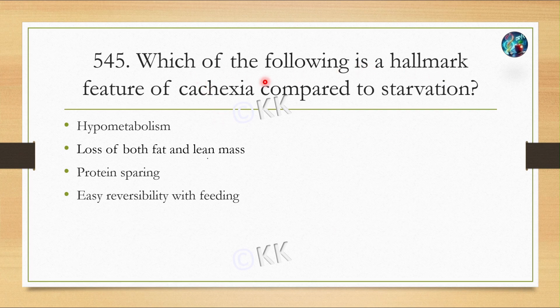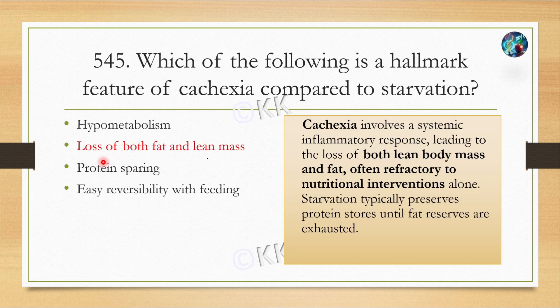Next question: which of the following is a hallmark feature of cachexia compared to starvation? Option A: hypometabolism. Option B: loss of both fat and lean mass. Option C: protein sparing. Option D: reversibility with feeding. The correct answer is Option B — loss of both fat and lean mass. Cachexia involves a systemic inflammatory response leading to loss of both lean body mass and fat, often refractory to nutritional interventions alone. Starvation typically preserves protein stores until fat reserves are exhausted.